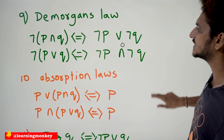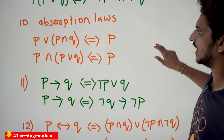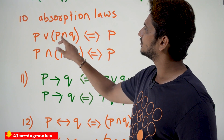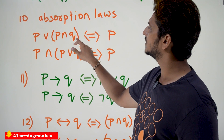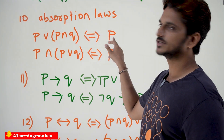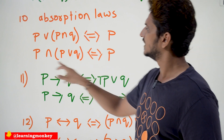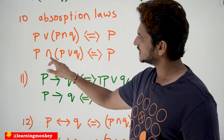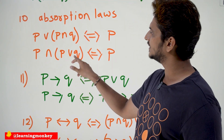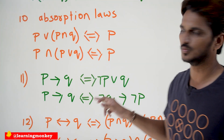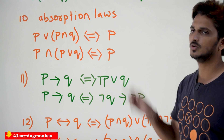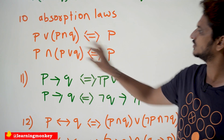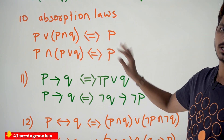The next one is the absorption law. P disjunction (P conjunction Q) is the same as P. Similarly, P conjunction (P disjunction Q) is equal to P. Whenever you have this form, you can simplify it to just P.